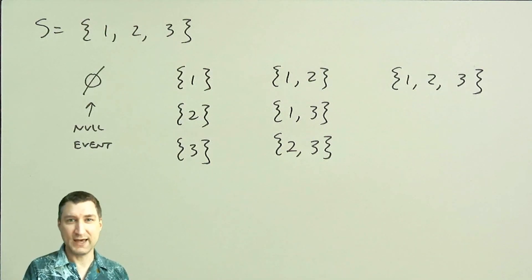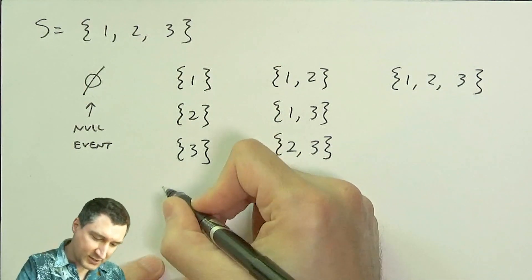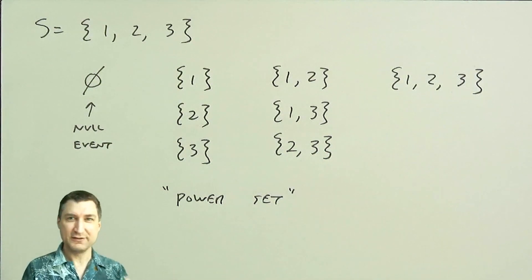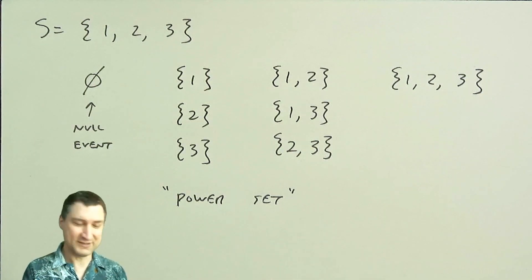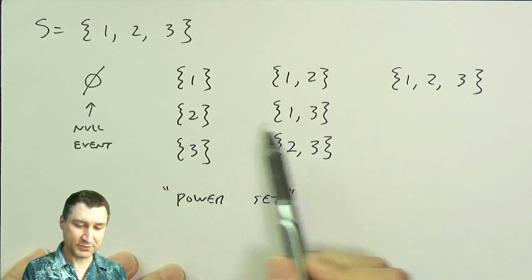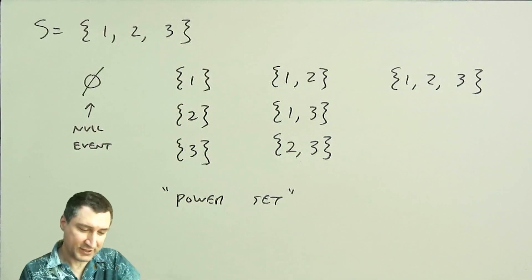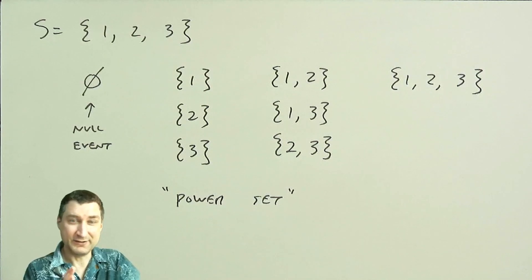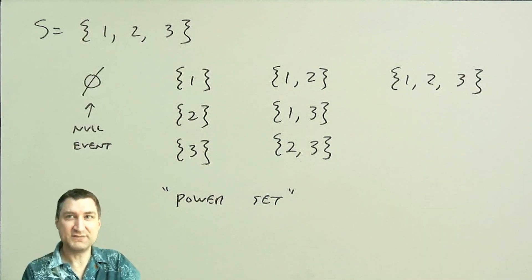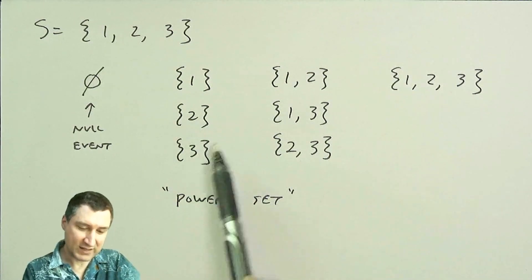Then I have events composed of one outcome each, events composed of exactly two outcomes, and the event composed of all three outcomes. So I had three possible outcomes and eight possible events. This is sometimes called the power set — because I have three outcomes and eight events, and two to the third power is eight, so it's related to taking an exponent. When I have a continuous sample space or infinitely many outcomes, it's not possible to list all these events.